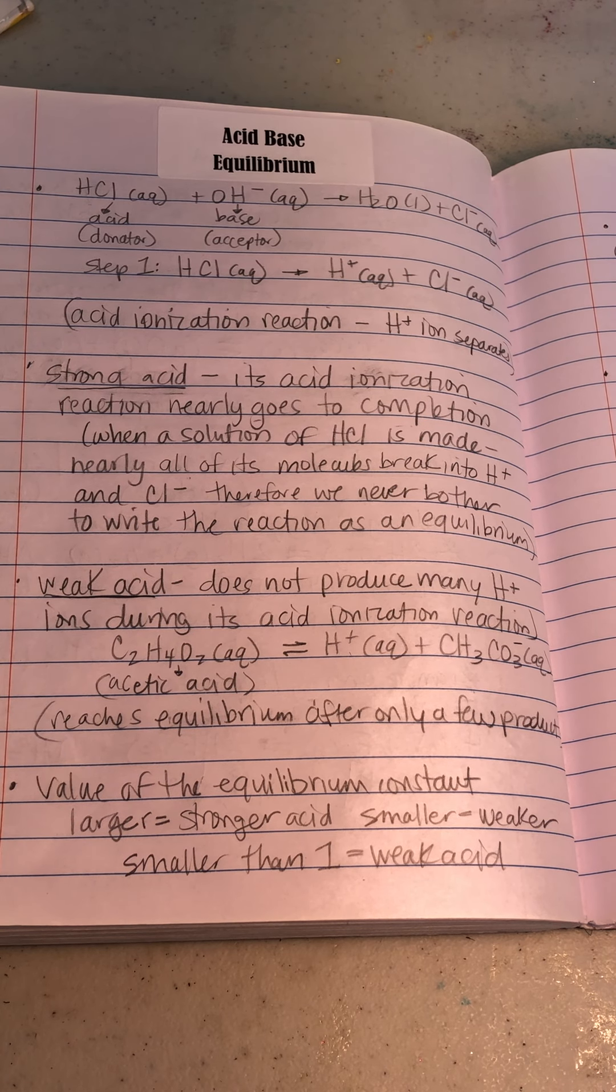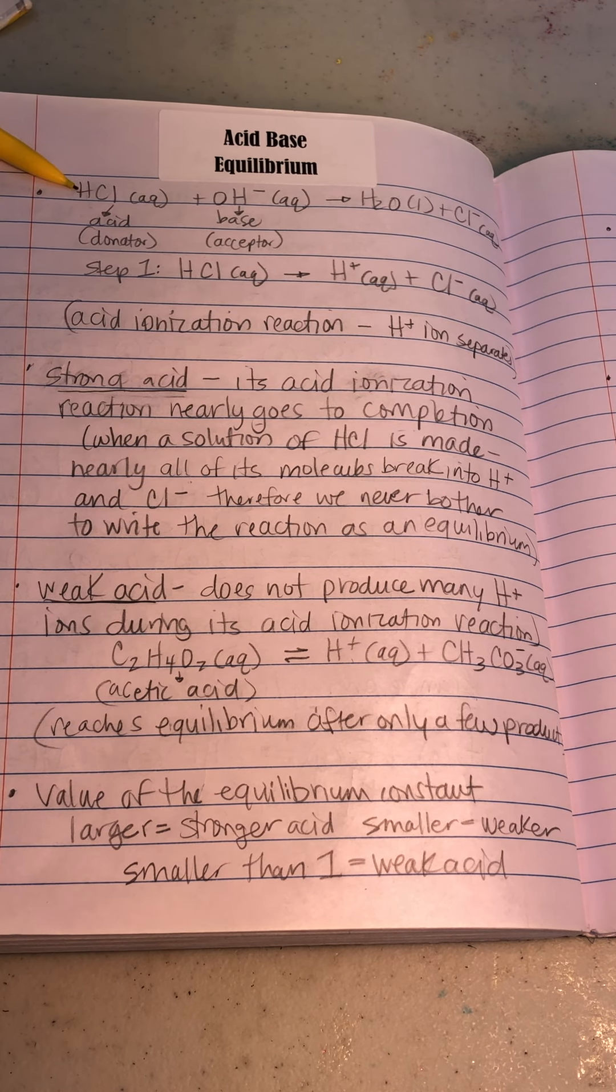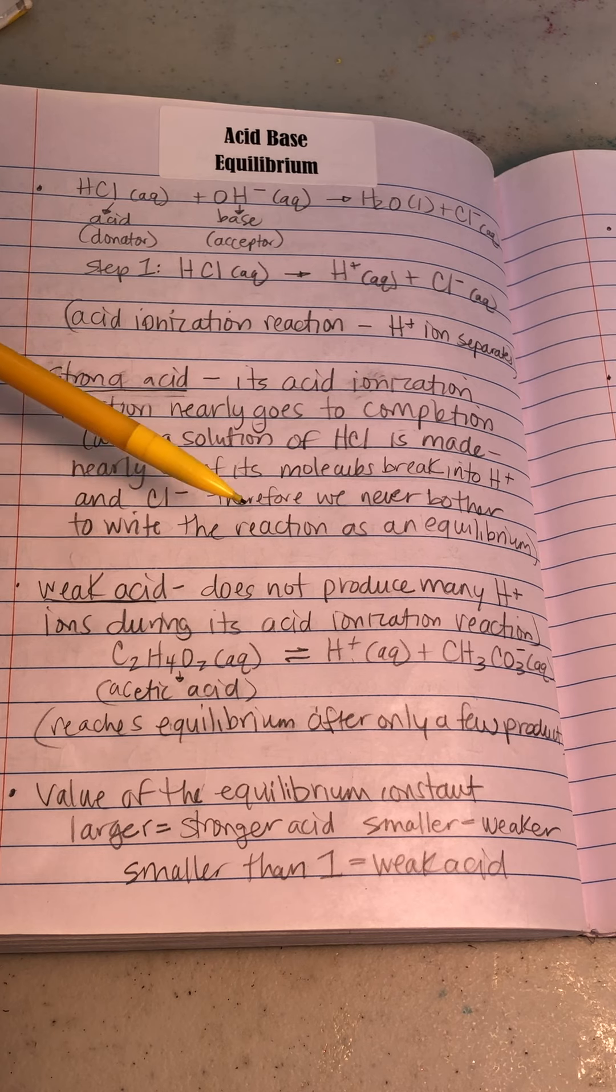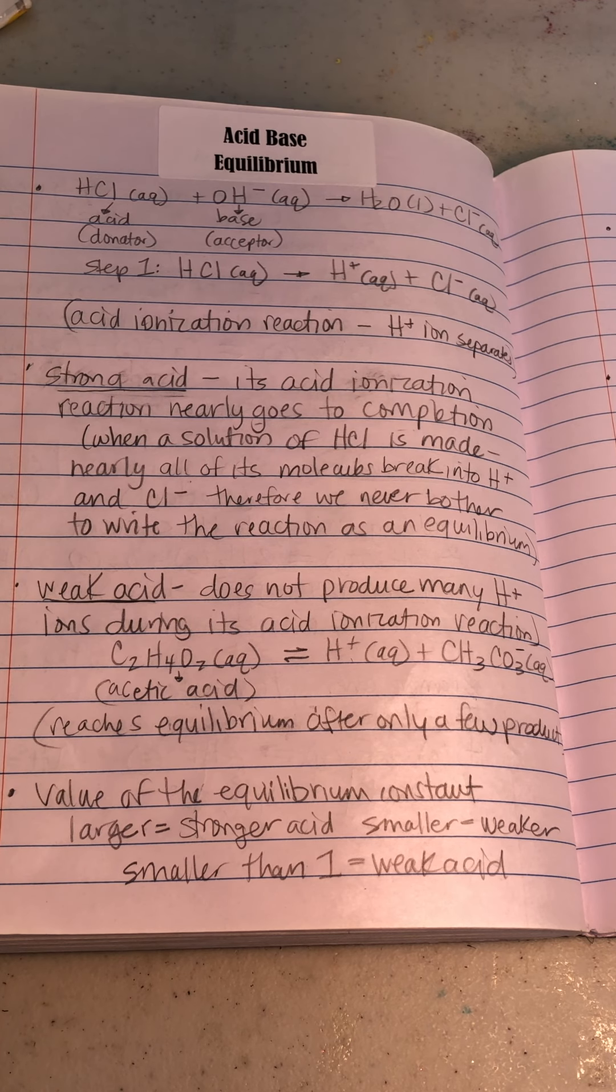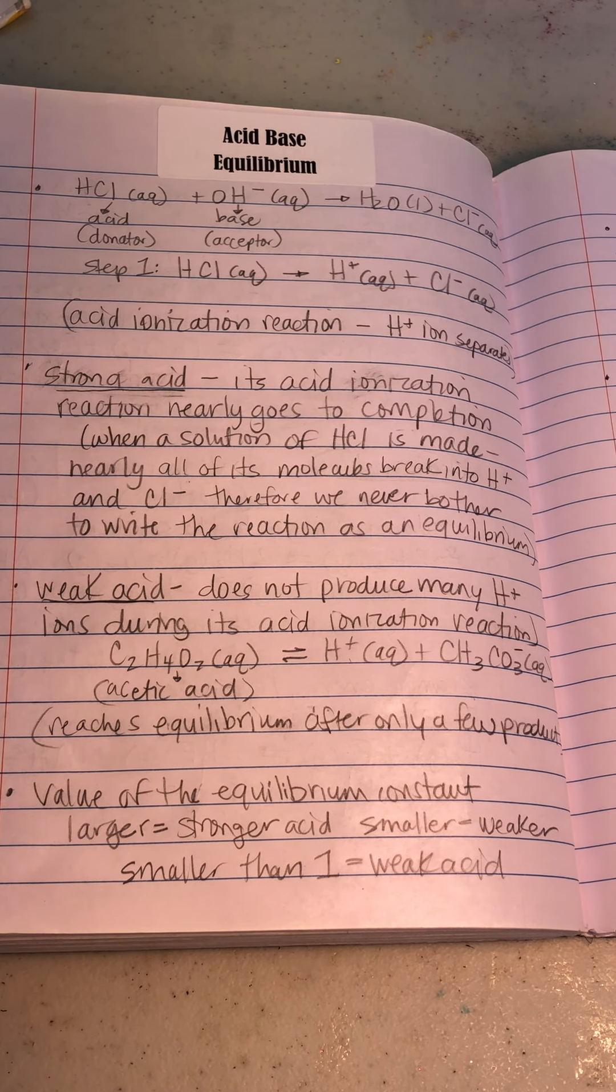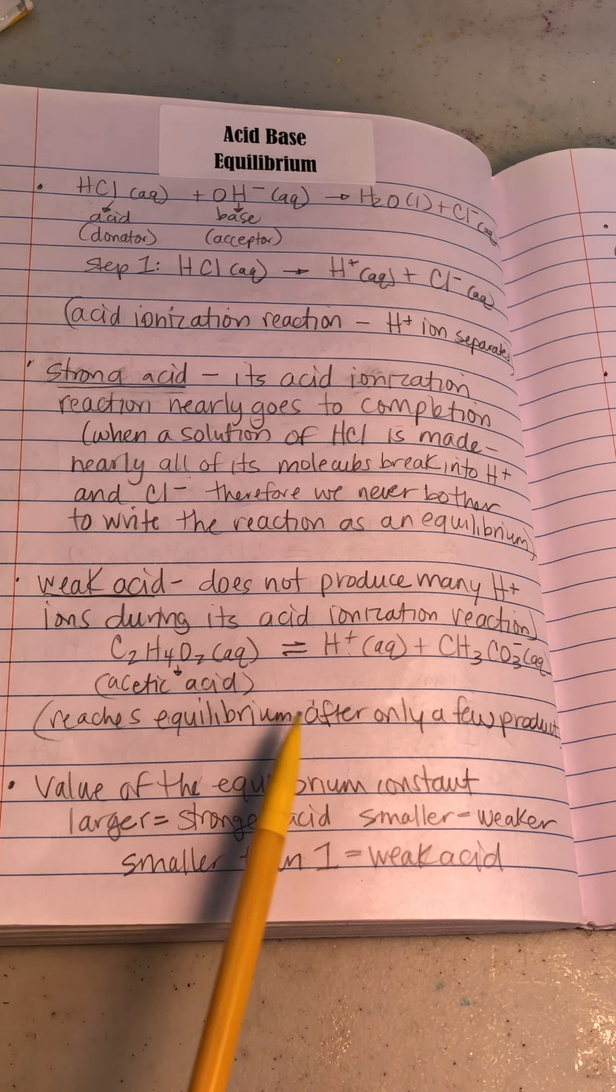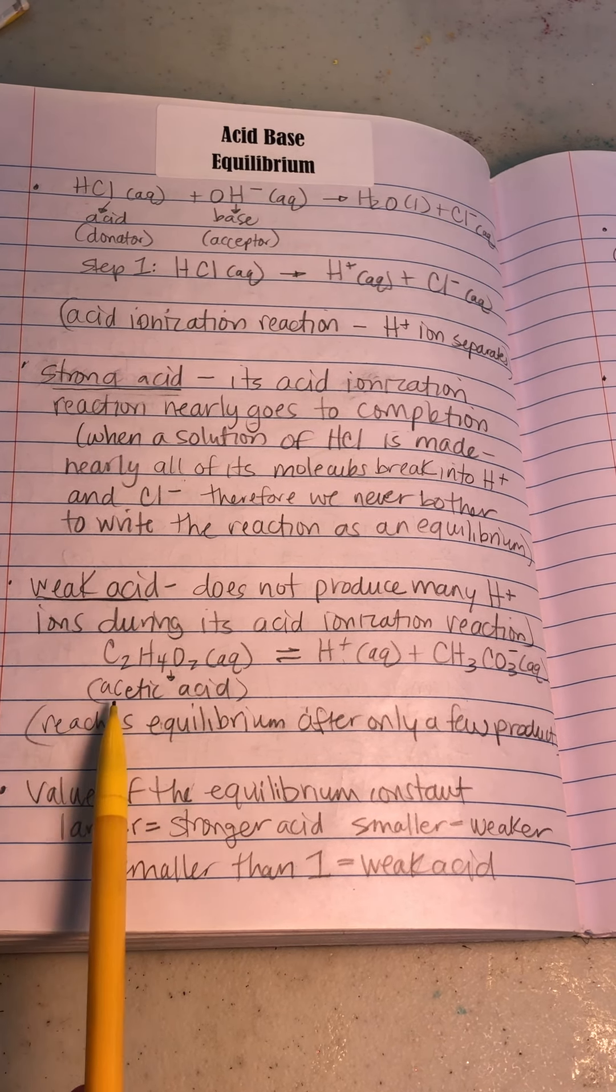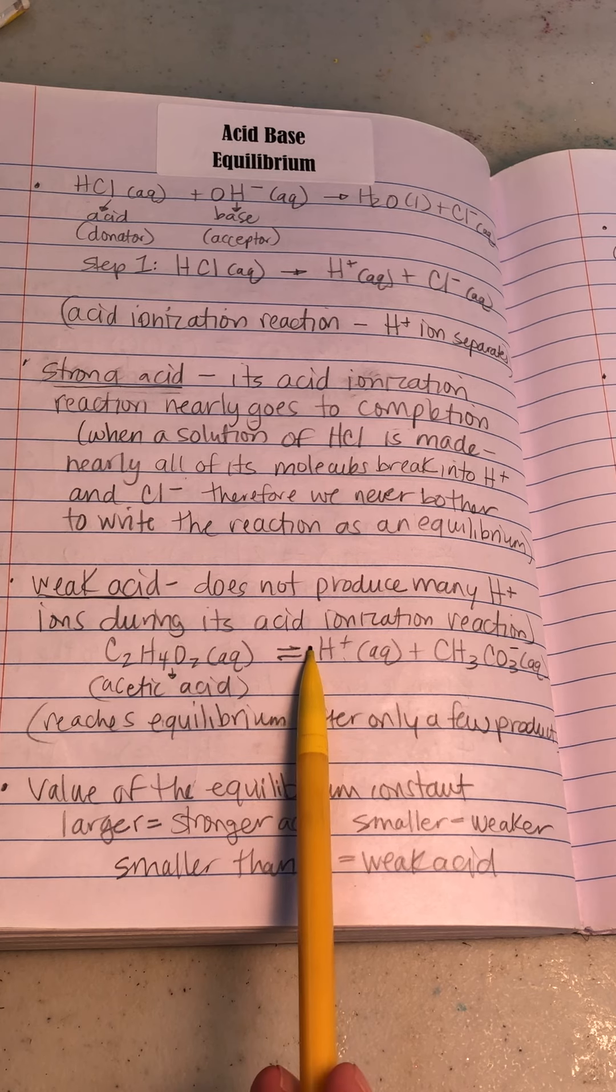Meaning that there's so many things, so many even break apart, so many things are able to form on the product side. When a solution is made, nearly all of its molecules break into H+ and Cl. Therefore, we never bothered to write the reaction as an equilibrium because you sort of know that it eventually becomes an equilibrium situation, but the majority of the time, you'll just write it like this with the arrow going that way because the majority of the time, so much of this breaks apart and you have the product side being of the stronger. Weak acid. So if you're weak acid, here's what happens. It does not produce many H+.